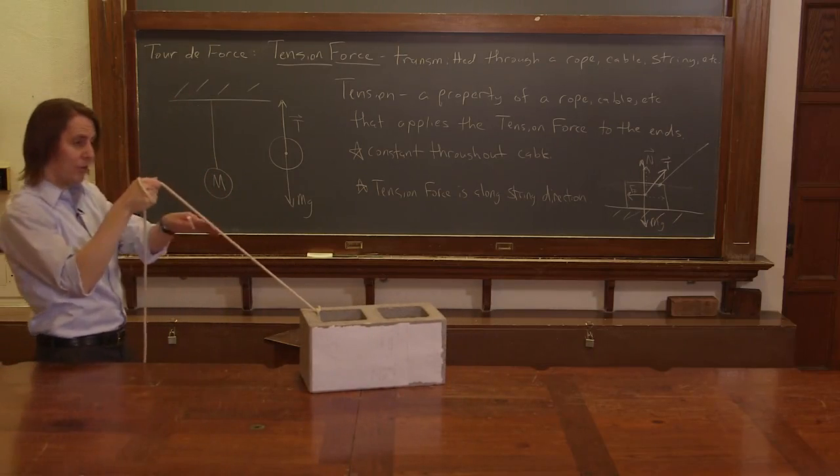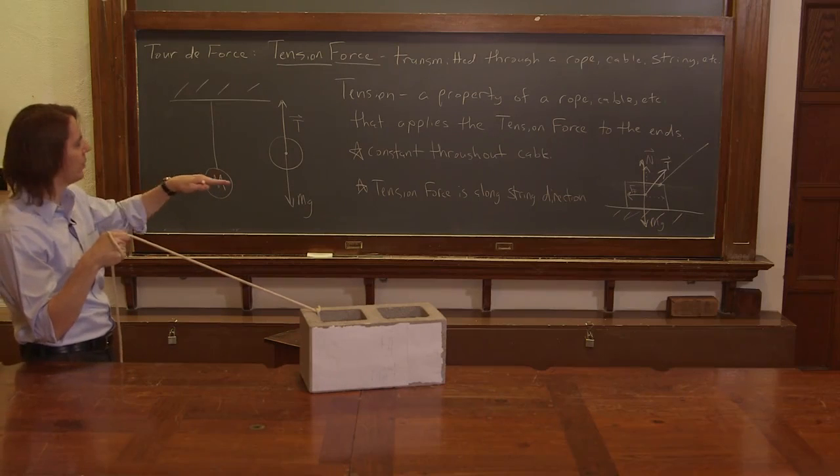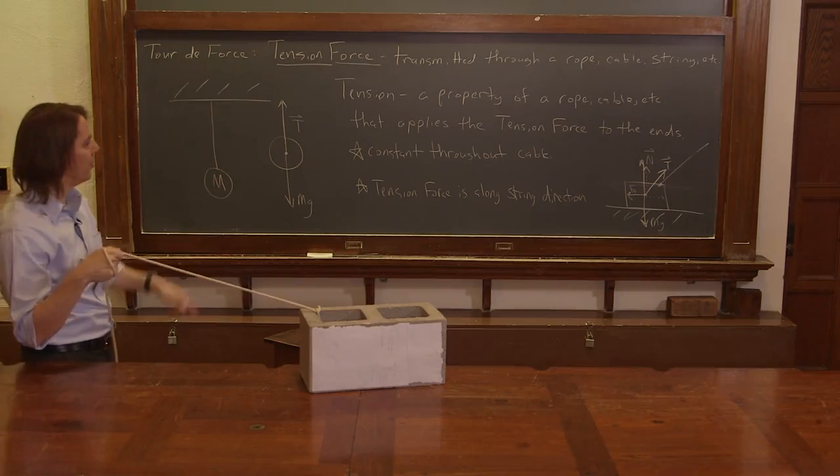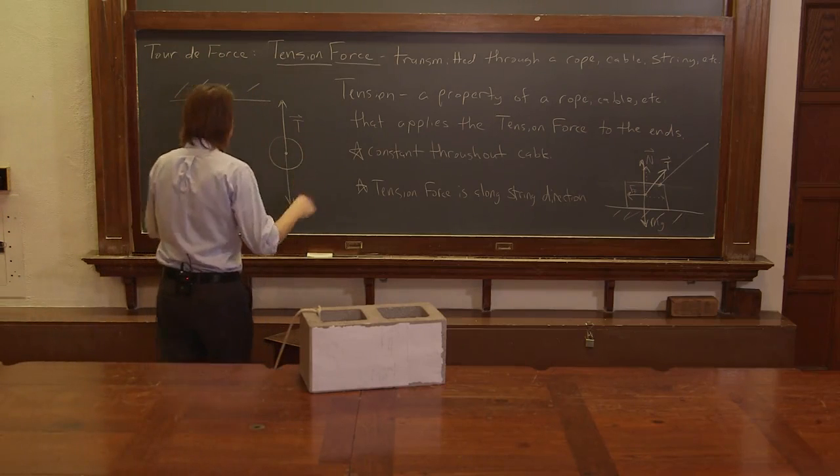So there, I pulled. Notice I pulled at a lower angle to get more of my component horizontal. Therefore, I overcame static friction and made the block move. So that's really it in a nutshell.